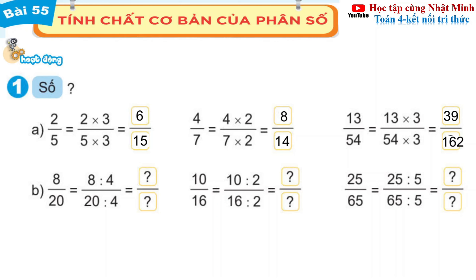Câu B: 8 phần 20 bằng 8 chia cho 4 bằng 2, 20 chia cho 4 bằng 5, chúng ta được 2 phần 5. Tiếp theo 10 phần 16: 10 chia cho 2 bằng 5, 16 chia cho 2 bằng 8, chúng ta được 5 phần 8. Tiếp theo 25 phần 65: 25 chia cho 5 bằng 5, 65 chia cho 5 bằng 13, chúng ta được 5 phần 13.